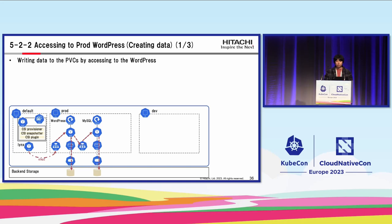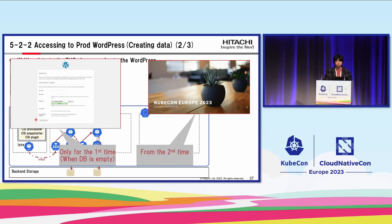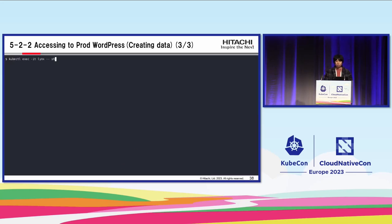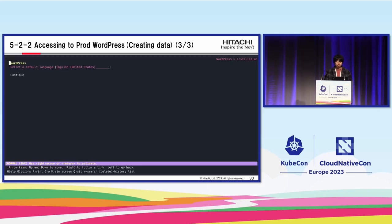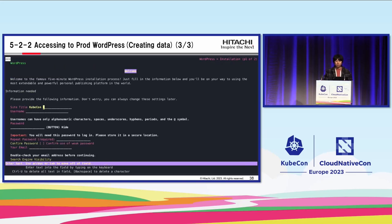Step two: access the prod WordPress. This step writes data to the PV by accessing WordPress. On first-time access, the user will see the setup web page prompting creation of a WordPress site. We connect to prod WordPress using curl and links. Then we connect to the prod WordPress site. Since we are connecting for the first time, we need to fill in required information — for example, the site title 'KubeCon Europe 2023.' After that, install WordPress and complete the initial setup.